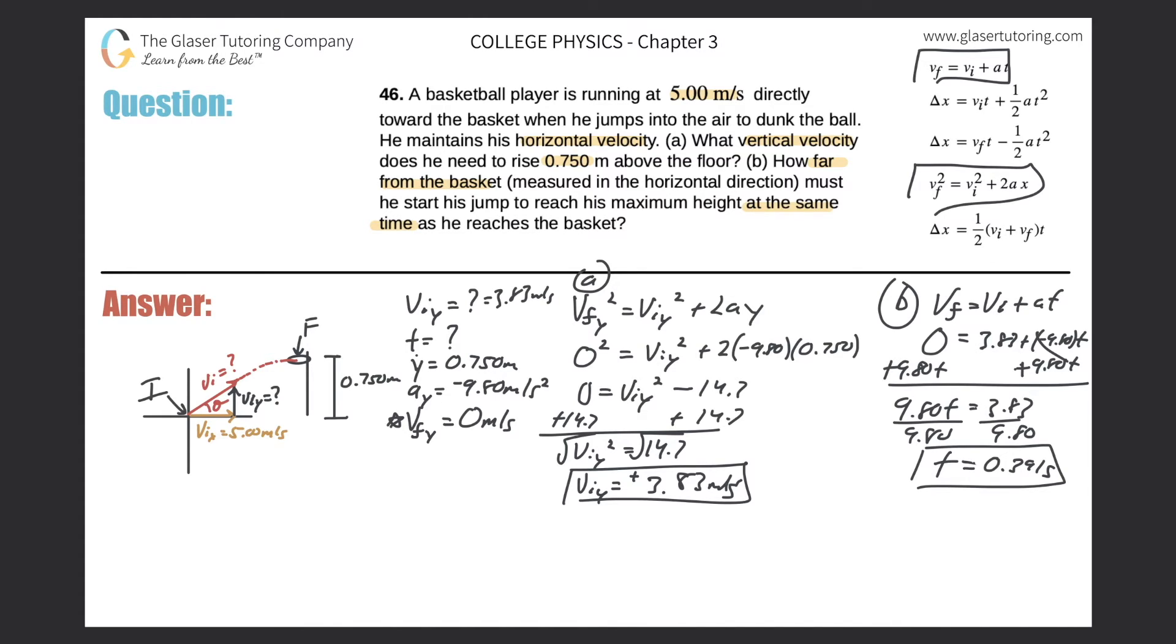Since that's how long he is in the air, this time will both represent the time it took him to get to the highest point and also the time that it will take him to reach his horizontal distance from when he should have started his jump. So now what I can do, let's go to the x frame.